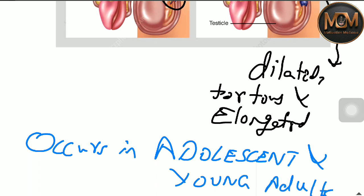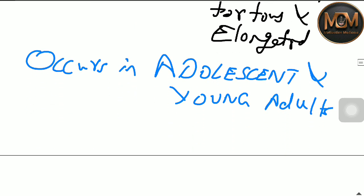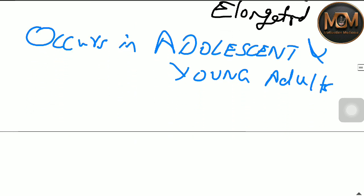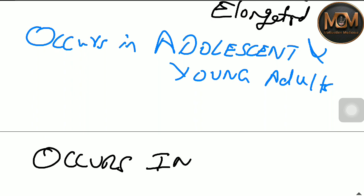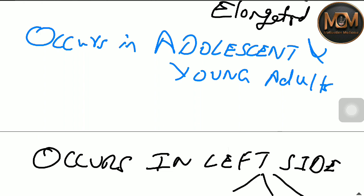Varicocele commonly occurs on the left side. There are three reasons for this. The first is that the left testicular vein is placed at a right angle, which leads to high venous pressure in the left testicular vein.